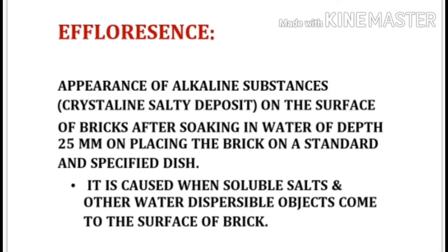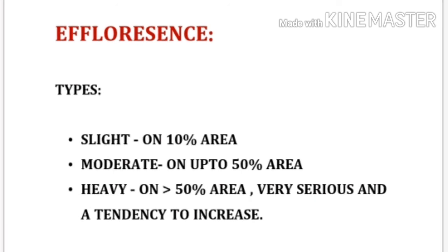Efflorescence: It is the appearance of alkaline substances — that is, crystalline salty deposits — on the surface of bricks after soaking in water to a depth of 25 mm by placing the brick on a standard specified dish. It is caused when soluble salts and other water-dispersible substances come to the surface of brick. Types of efflorescence: slight — when affected area is up to 10 percent; moderate — when affected area is up to 50 percent; and heavy — when affected area is more than 50 percent.